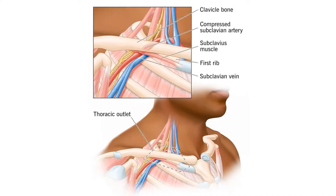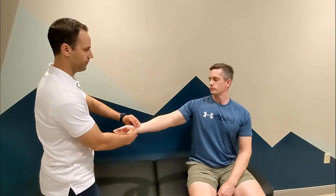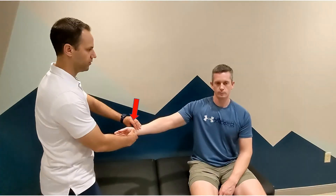Adson's test is a special test used to evaluate patients with suspected thoracic outlet syndrome. The patient's arm is abducted with varying degrees of shoulder extension, and the examiner maintains palpation of the radial pulse.